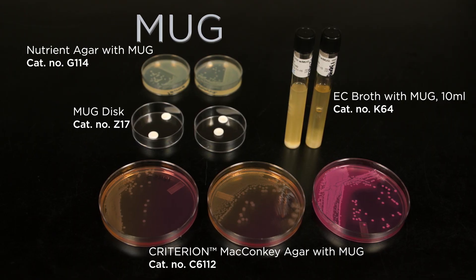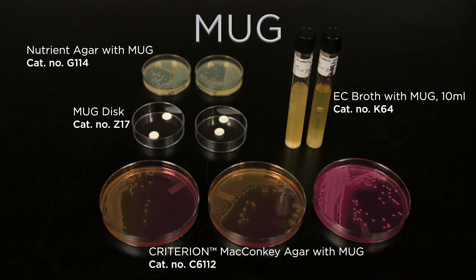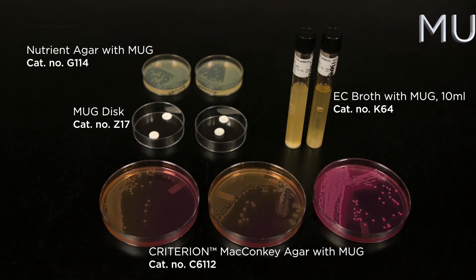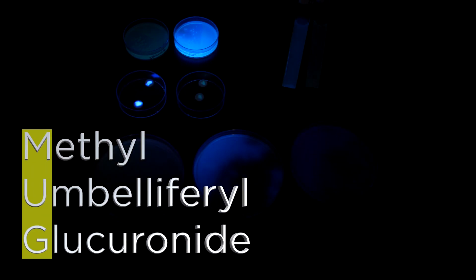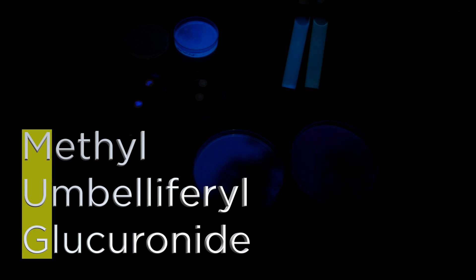Products containing MUG, such as EC Broth with MUG, Violet Red Bile Agar with MUG, Lauryl Tryptose with MUG, MacConkey with MUG, and MUG or Mott discs, also utilize fluorescence. MUG is the acronym for methyl umbelliferyl glucuronide. These products are used to detect E. coli from food and water samples.